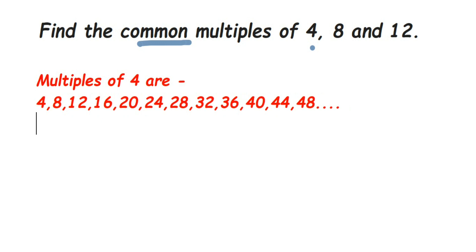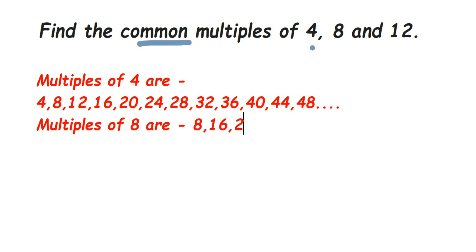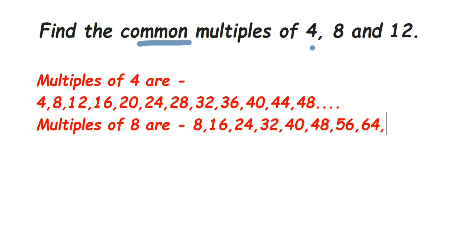Now the multiples of 8. Write down the 8 times table: 8, 16, 24, 32, 40, 48, 56, 64, 72. Since the previous list stopped at 48, you can stop around 56 and check for common multiples.